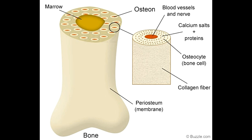Bones have two types of tissues: the hard, strong exterior and the spongy interior marrow. Osteocytes, osteoblasts, and osteoclasts are found on the outer side of bones.